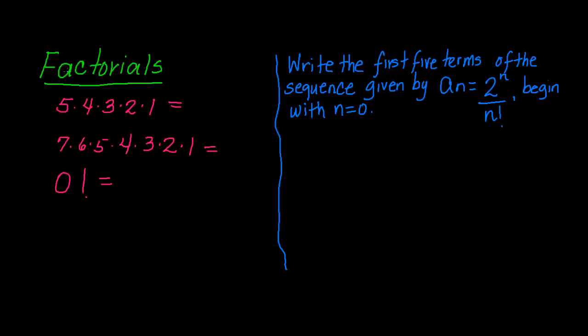In this video, we're going to talk about factorials, and this is what a factorial is. Whenever you see the product of factors in descending order, like in this example, 5 times 4 times 3 times 2 times 1, see how the factors are decreasing by 1.